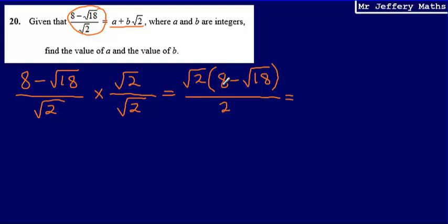This is going to give me root 2 multiplied by 8, which I can write as 8 root 2, minus root 2 multiplied by root 18. Now that's going to give me root 36, and that's still divided by 2.